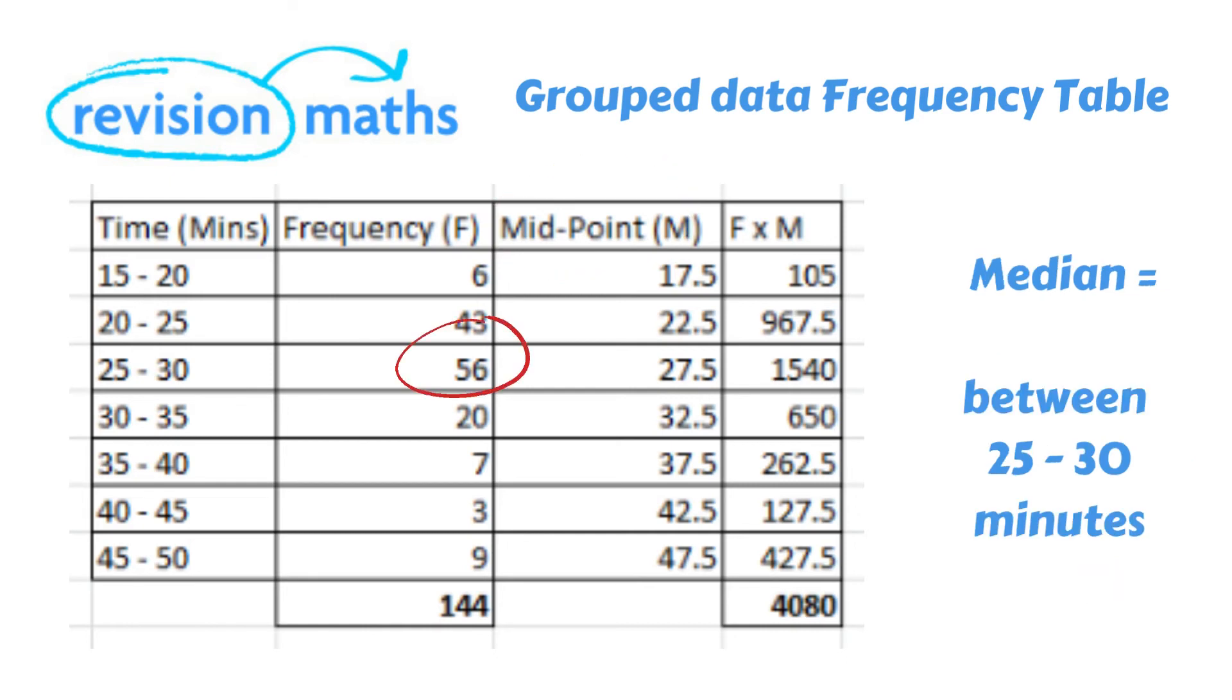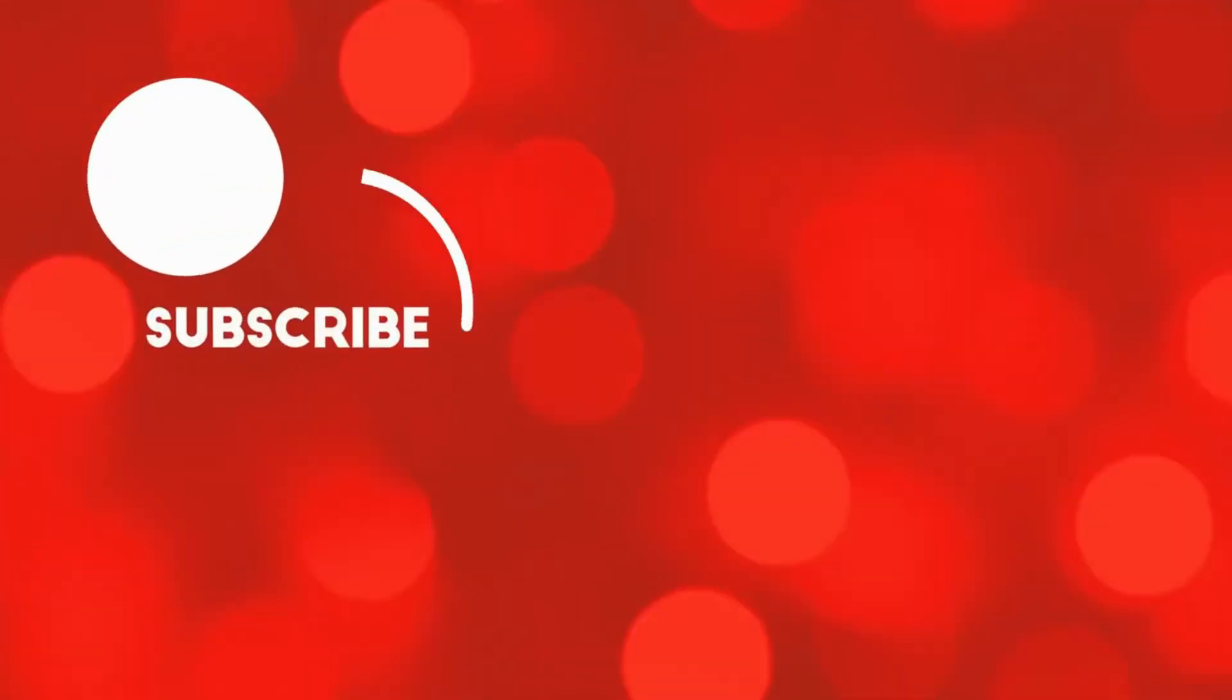The median interval is the 72nd runner who finished in group number three so the median of this group is between 25 and 30 minutes. The modal group is also 25 to 30 minutes as 56 runners finished in this group.